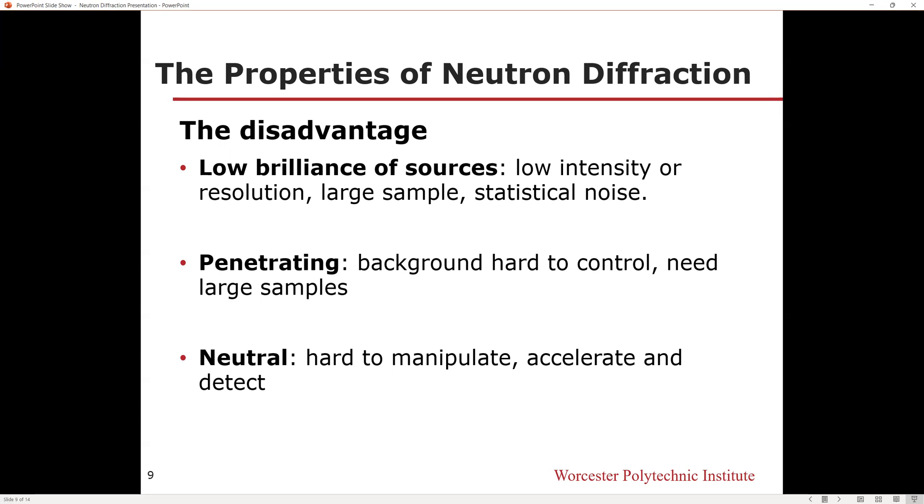The neutral property of neutron at the same time makes it hard to manipulate, accelerate, and detect, which increases the difficulty of operation of neutron experiments.